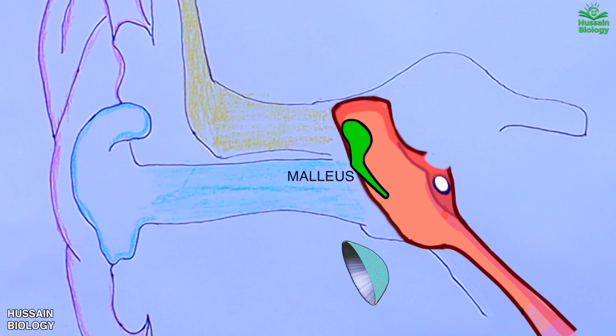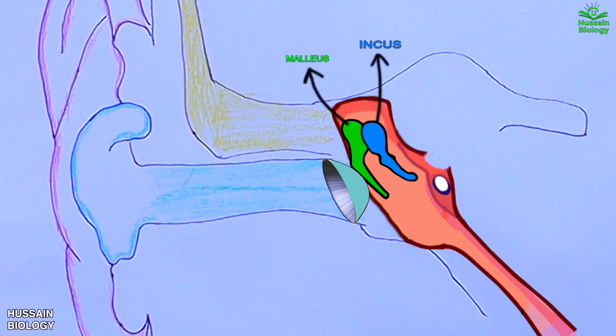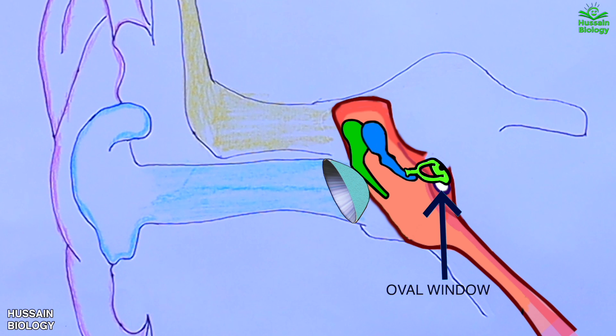On the other side, the malleus is connected with the incus bone. Furthermore, this incus is connected with the stapes bone, and finally this stapes bone is connected to the oval window by the annular ligament. So we can say this stapes bone communicates with the inner ear through the oval window.